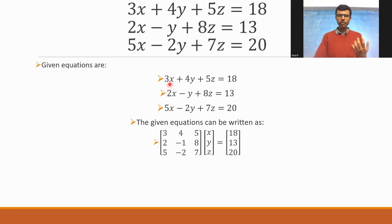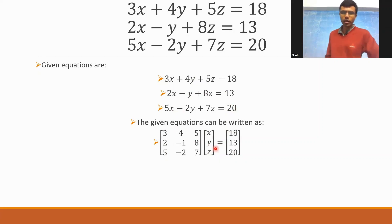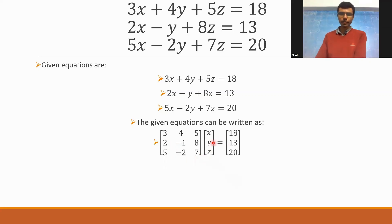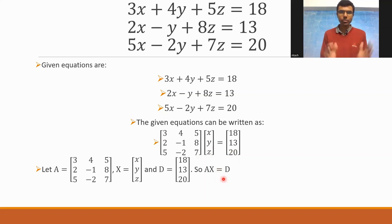If you observe, the X coefficient is 3, and that's why I have 3; and beside it, 4 and 5. Then 2, -1, 8. Then 5, -2, 7. Into X, Y, Z equals 18, 13, 20. I'm going to take the first matrix as A, the second matrix as X, and the third matrix as D. So basically I have AX = D. This is my matrix equation, and this is what I need to solve with the help of Cramer's Rule.